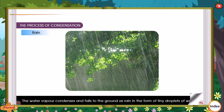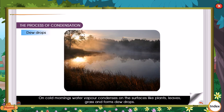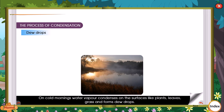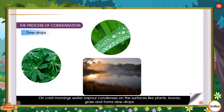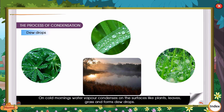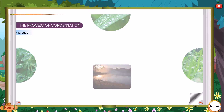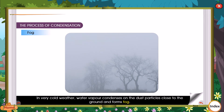Rain: The water vapour condenses and falls to the ground as rain in the form of tiny droplets of water. Dewdrops: On cold mornings, water vapour condenses on surfaces like plant leaves and grass and forms dewdrops. Fog: In very cold weather, water vapour condenses on dust particles close to the ground and forms fog.